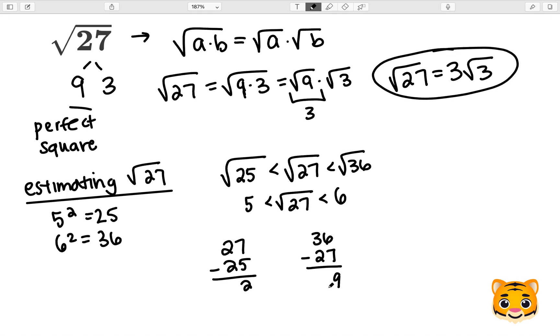We can therefore see that 27 is closer to 25, which means the square root of 27 is closer to 5. Therefore, we can estimate the square root of 27 as approximately 5.